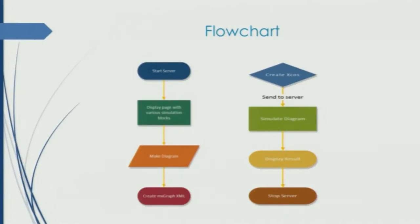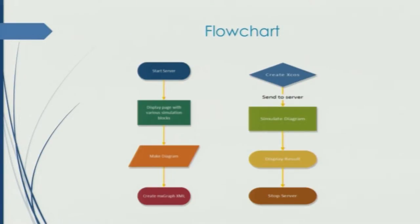This is the flowchart. First, the server will start, then it will display the editor and the palette with all the blocks. The user can make a diagram and MXGraph will create raw XML from the JSON, which will be created by data structures of the particular block dragged. Then XSLT will convert the MXGraph XML into XCAUSE format and send it to the server, which will simulate the diagram and display the result back to the browser.